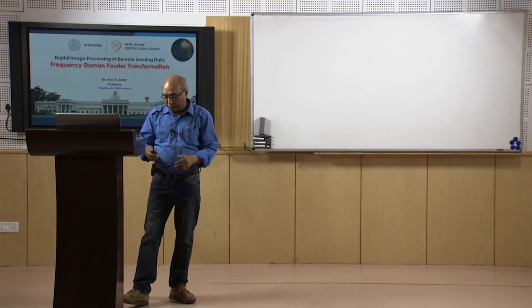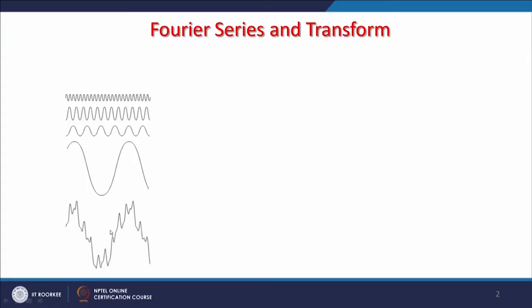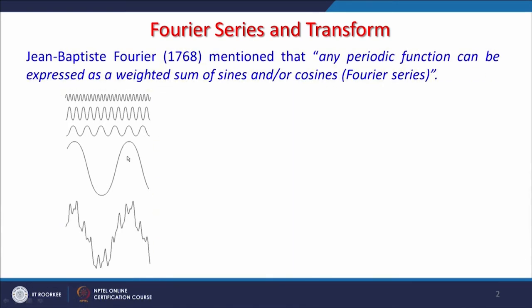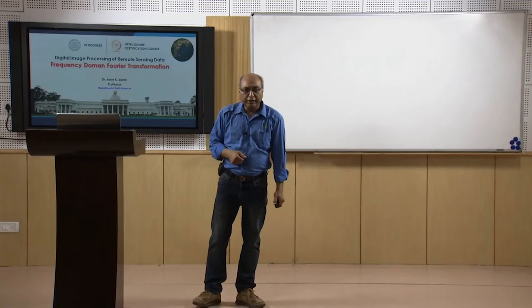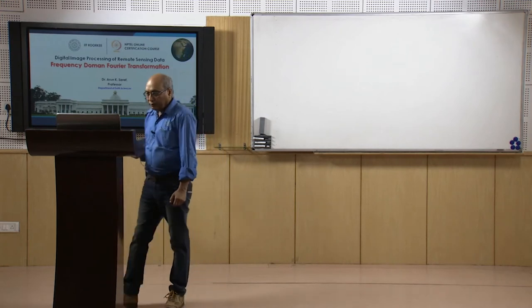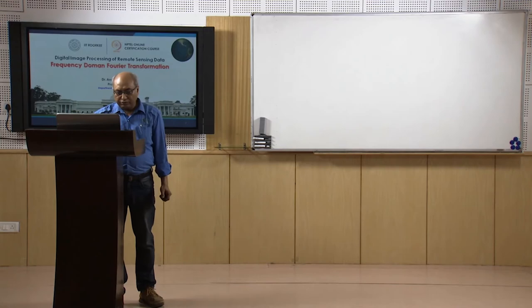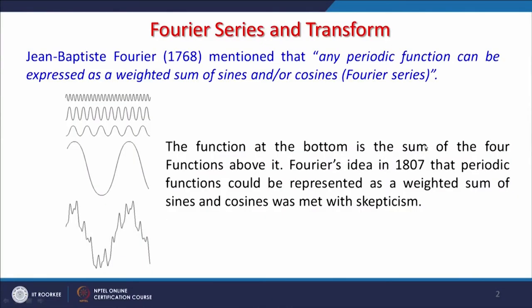We know that a wave, which is shown here, can be segmented into different waves. The lower one is the sum of all these waves. This was established in 1768 by Jean-Baptiste Fourier. He mentioned that any periodic function can be expressed as a weighted sum of sines and/or cosines — and that we call as Fourier. The bottom function is basically the sum of four functions above it, of different wavelengths.